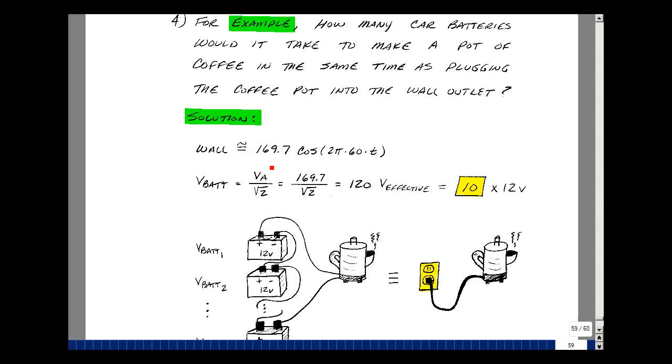The wall outlet's approximately 169.7 times the cosine of 2π times 60 times t. Battery voltage, then, would be equal to 169.7 divided by the square root of 2. That's equal to 120 volts.